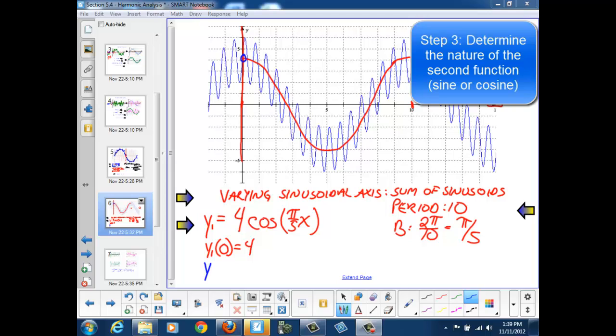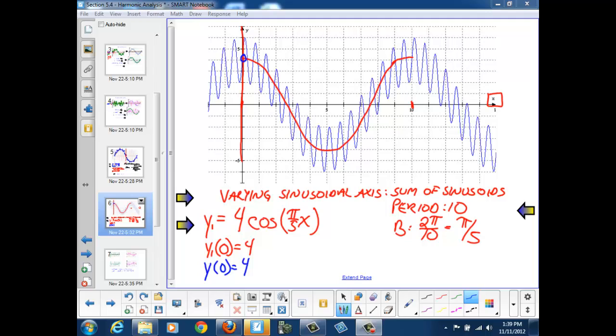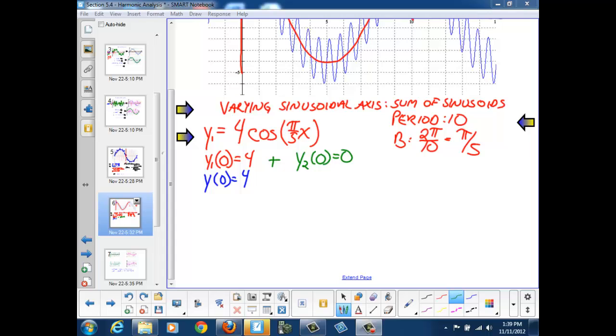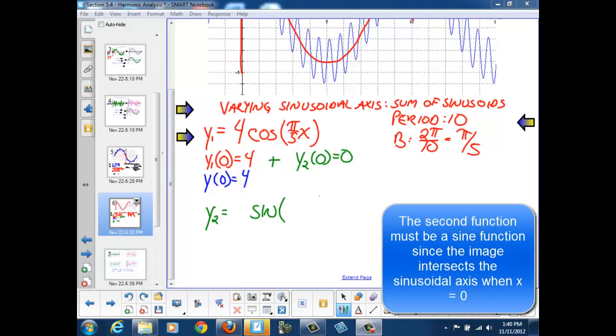So our blue function at 0 is also equal to 4. Now, since I'm adding a second sinusoid to my first sinusoid, I must be adding a sinusoid that has a value of 0 on the y-axis. If we're going to create y1 plus y2 to create the blue graph, of the two functions sine and cosine, the function that has a value of 0 on the y-axis is a sine function.